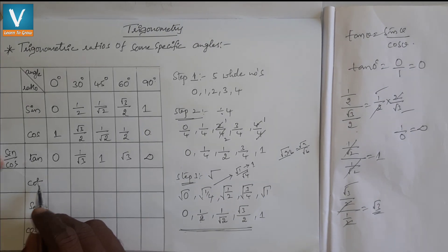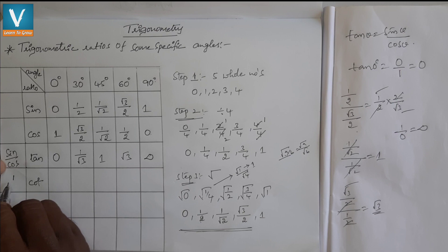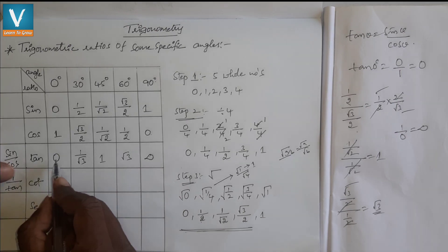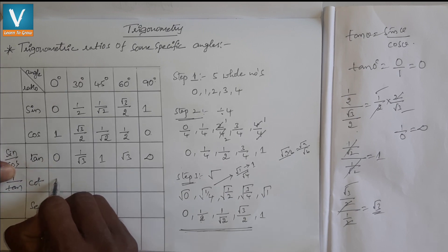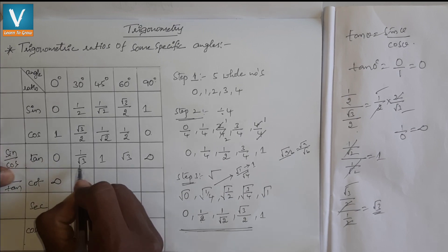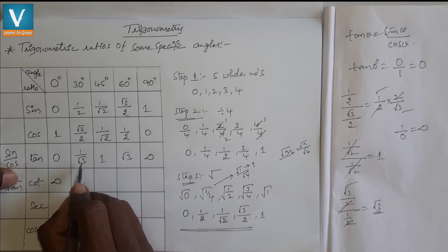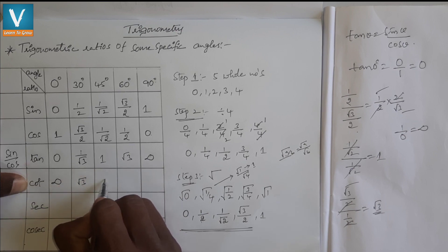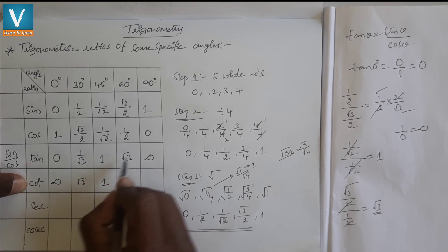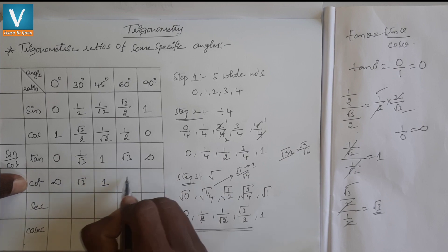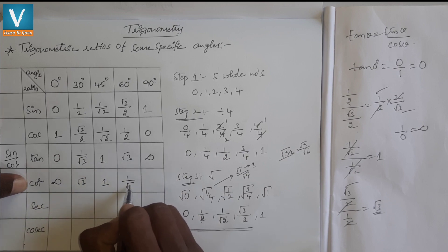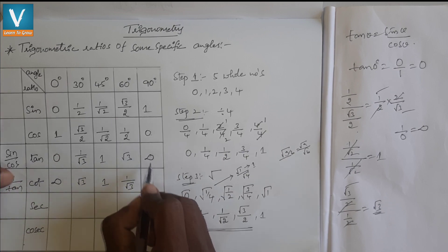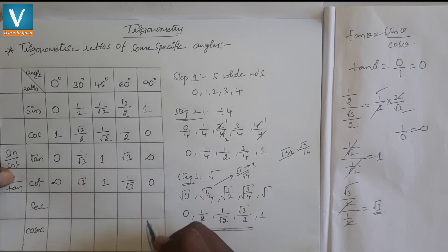Now for cotangent — cot is the multiplicative inverse of tan, that is 1/tan. So: cot 0° = 1/0 = infinity (not defined); cot 30° = reciprocal of 1/√3 = √3; cot 45° = reciprocal of 1 = 1; cot 60° = reciprocal of √3 = 1/√3; and cot 90° = 1/infinity = 0.